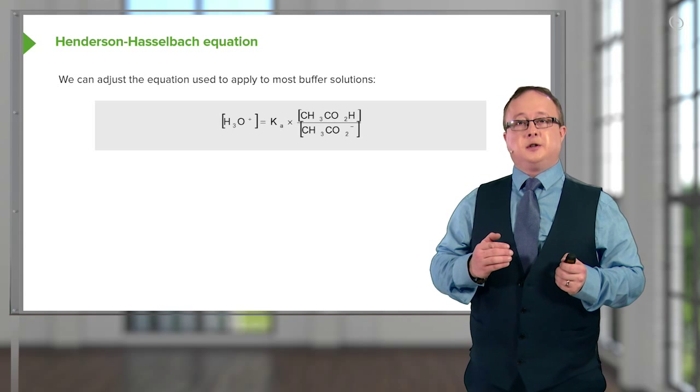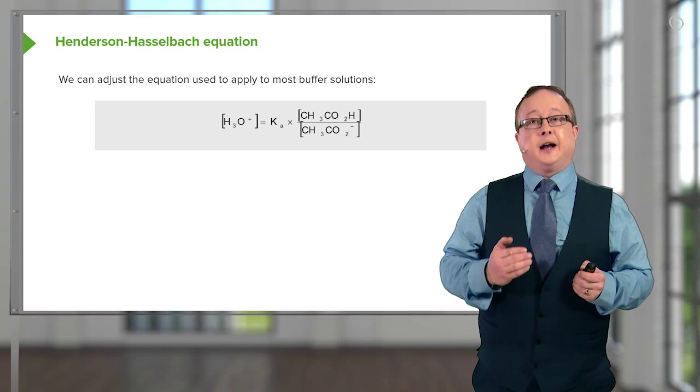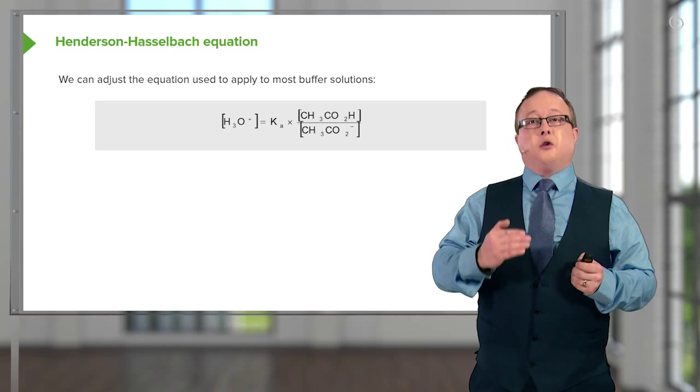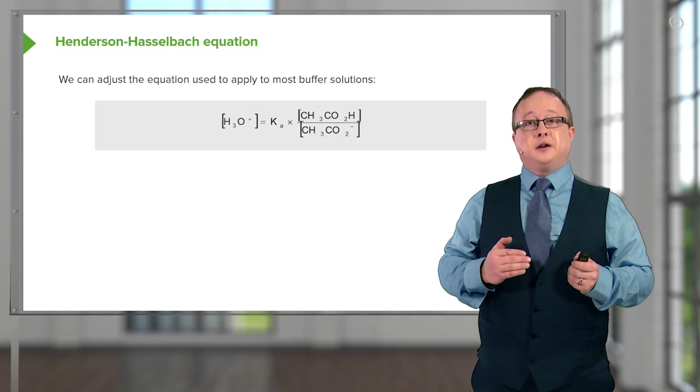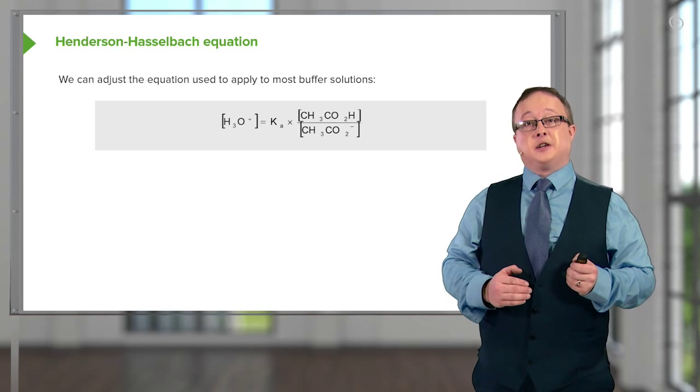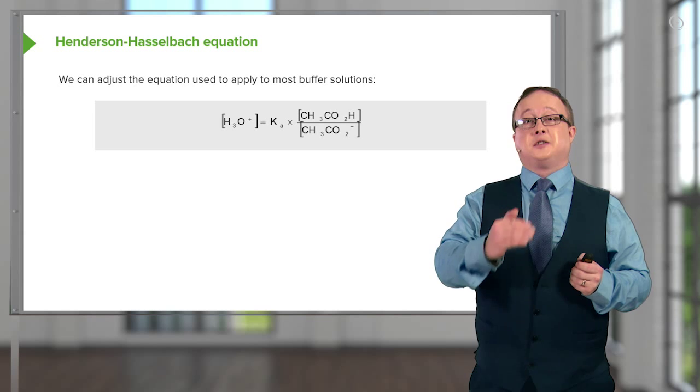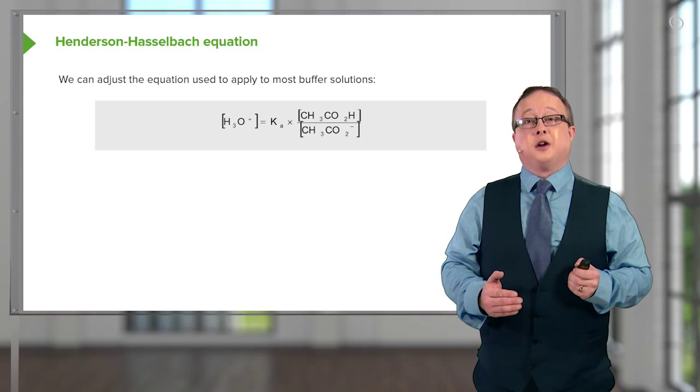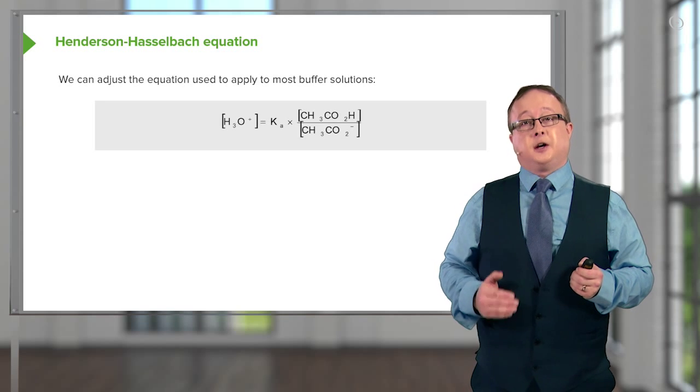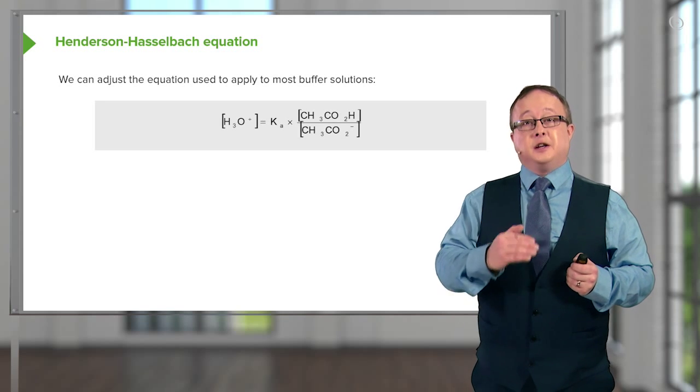One of the principal assumptions, and this is why you need either a weak acid or a weak base, is that the amount of sodium acetate that you add pretty much stays as sodium acetate, and the amount of acetic acid you add pretty much stays as acetic acid. That's your principal assumption. So you can control precisely how much H+ is in that solution.